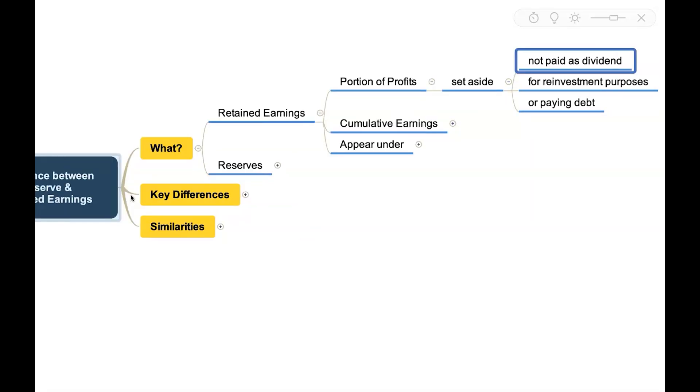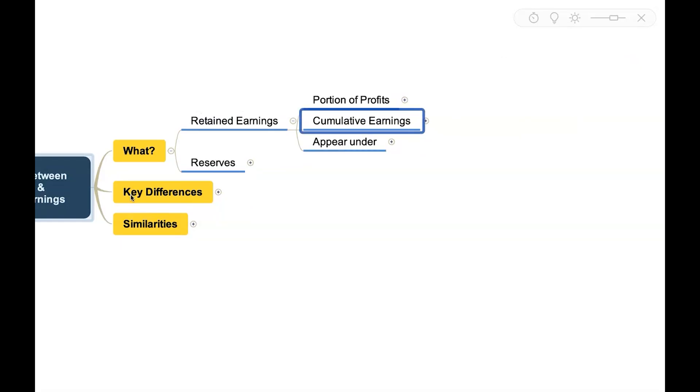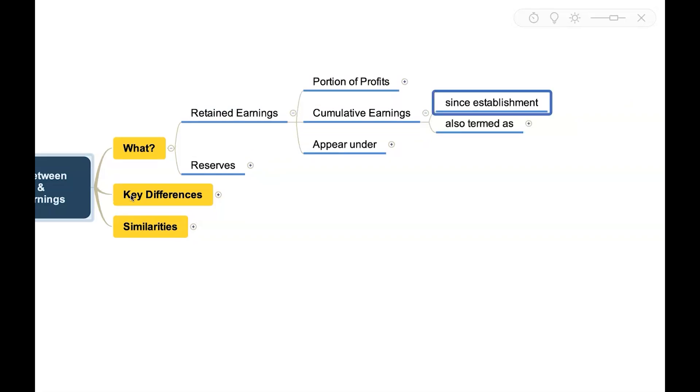They are retained within the business for reinvestment purposes or for paying debt, so they become cumulative earnings of that business since establishment. Year after year, when the profits are retained, they become cumulative earnings, so they are also termed as accumulated profits.